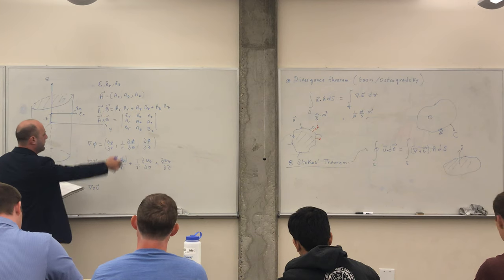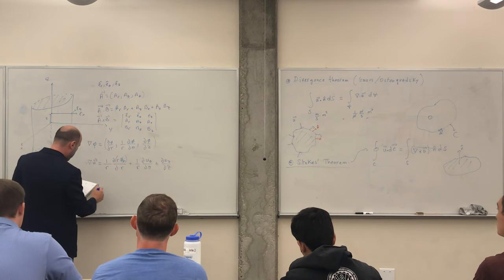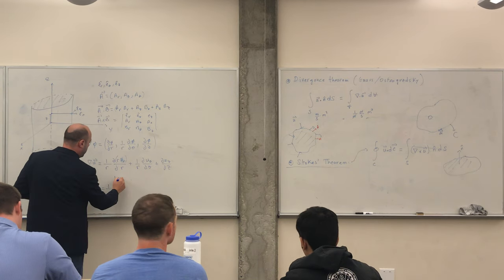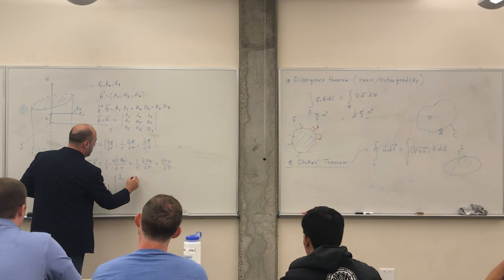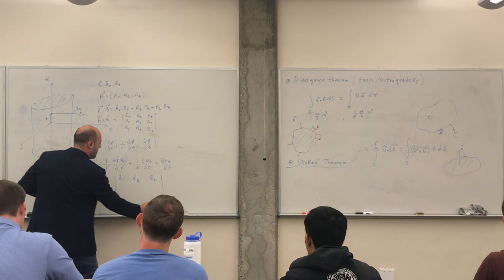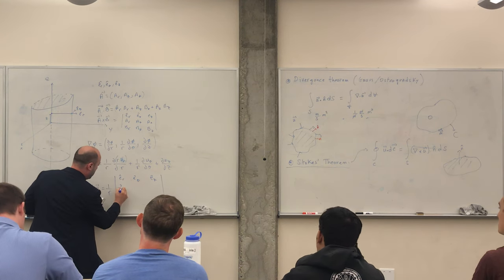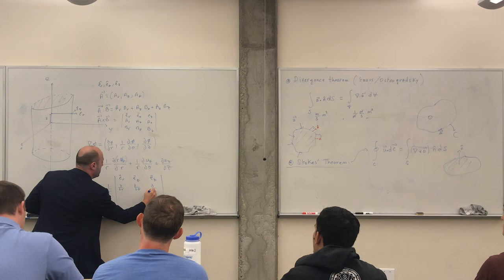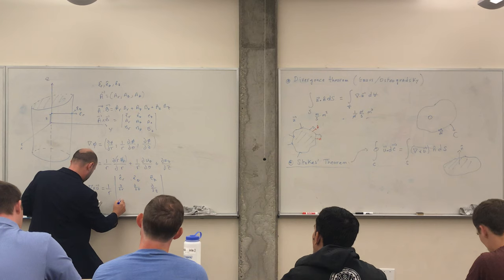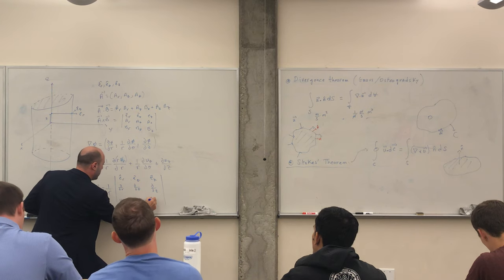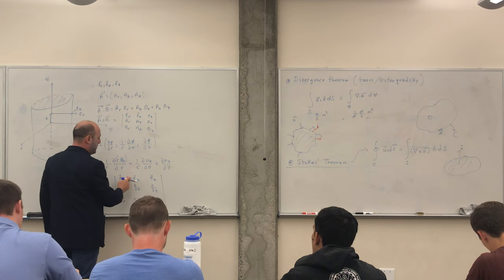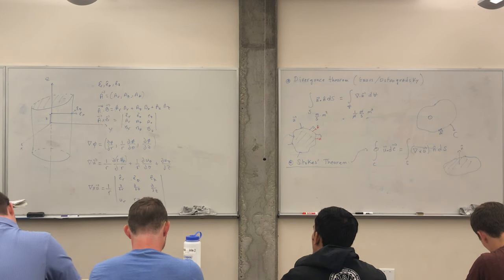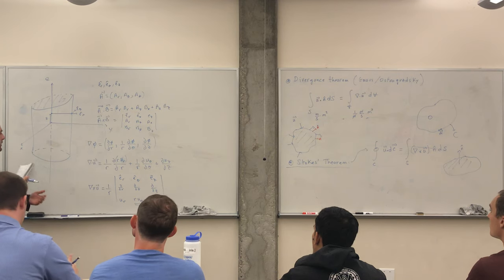The curl in cylindrical coordinates we won't derive, but trust the result: it involves d/d theta and d/dz terms, and importantly you'll have r u_theta appearing — not just u_theta — in the expression. This gives three components in the r, theta, and z directions. Note: this is not the same as simply applying the Cartesian cross product formula.